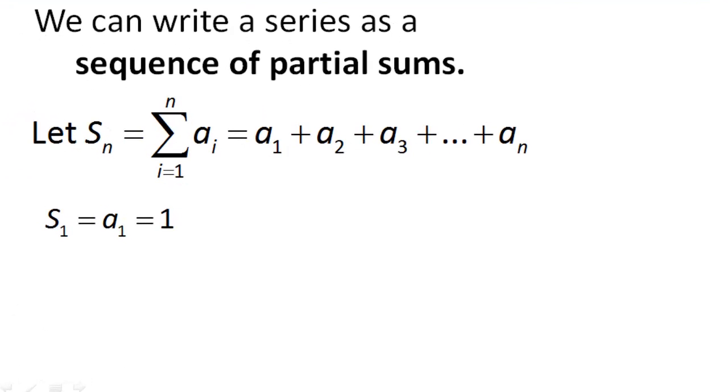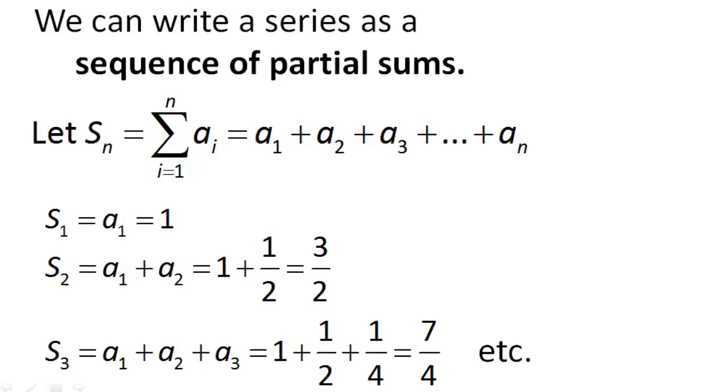So that means S1 would just be a1, which in our example is equal to 1. S2 would be a1 plus a2, which in our example is 1 plus a half, which is 3 over 2. S3 would be a1 plus a2 plus a3, which in our example turns out to be 7 over 4, if you add the first three terms together, and so on.